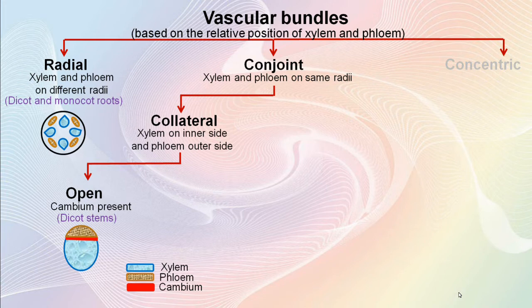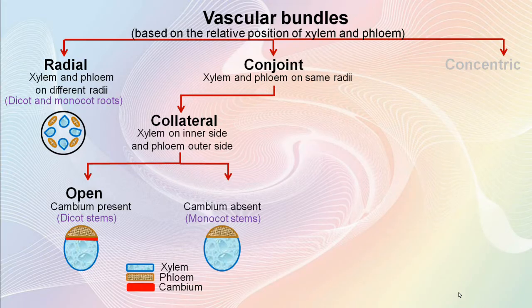On the other hand, the vascular bundles found in monocot stems lack cambium and so they will not produce secondary tissues. So they are called closed vascular bundles.